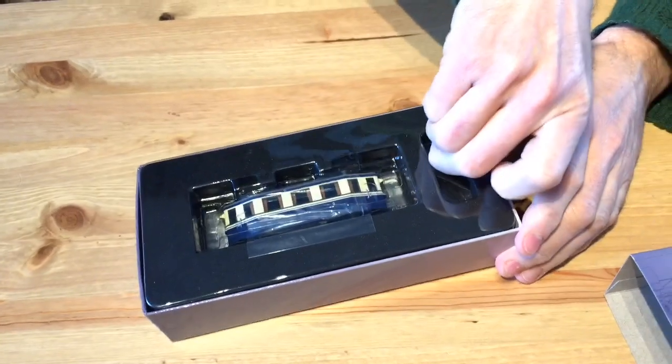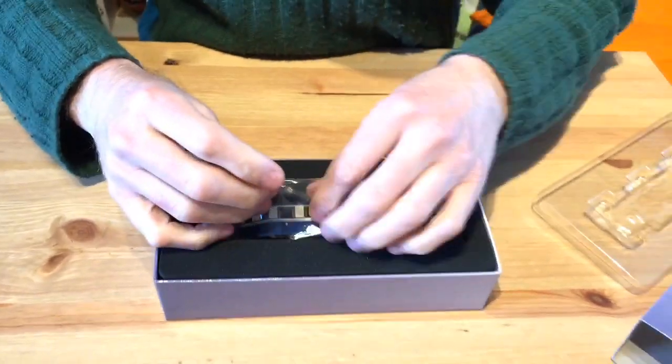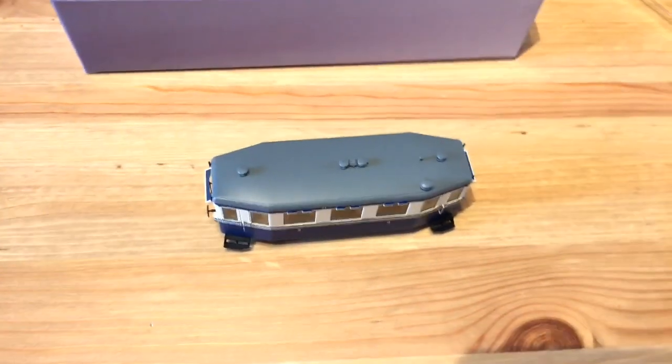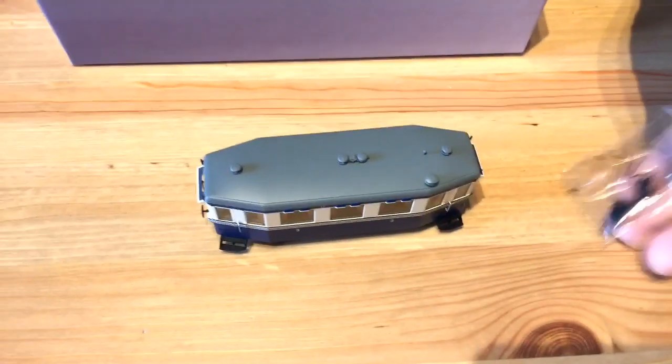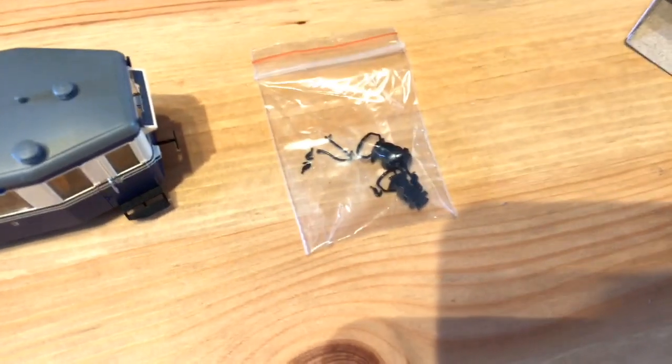Our first unboxing. Let's just film one here. That's the package. And some parts come with it. The blue model has some small parts to attach. Some hook and cables.